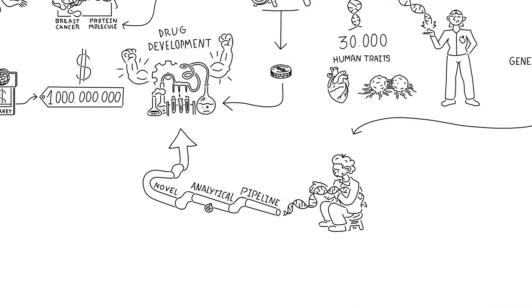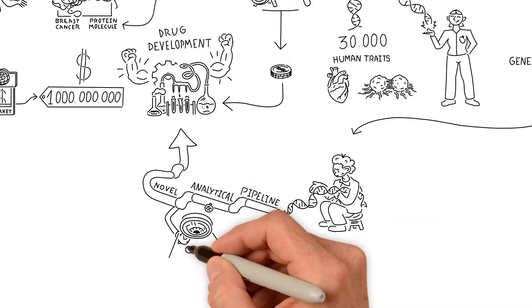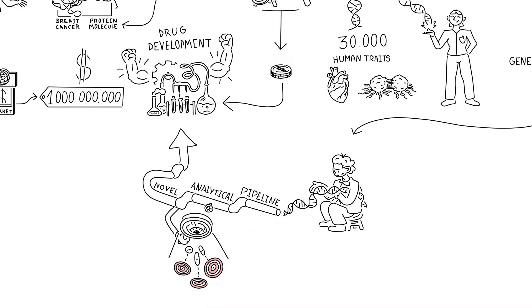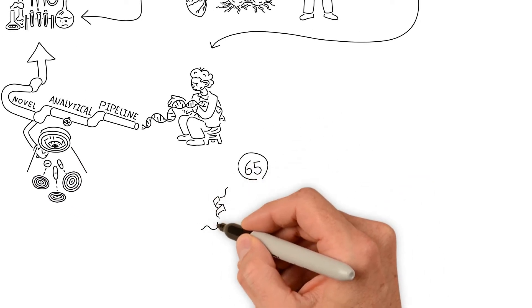We have already used this pipeline to identify possible new drug targets, identifying the causal effects of 65 proteins on 52 different diseases.